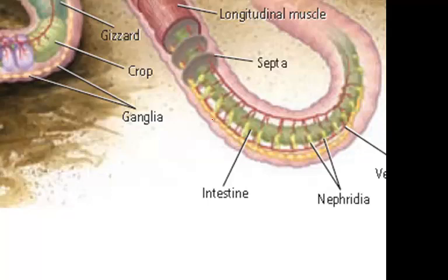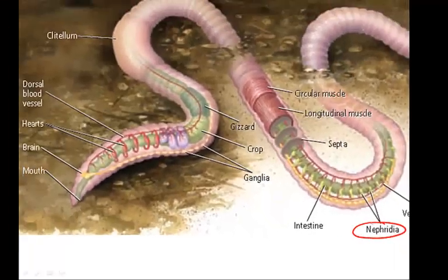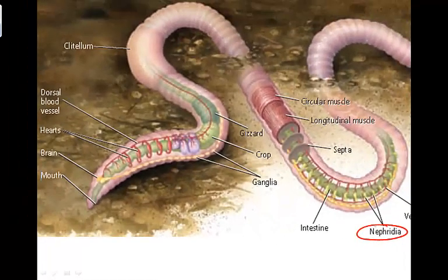There is a dorsal blood vessel that pumps blood to the anterior part of the body and a ventral blood vessel that brings blood to the posterior end. Earthworms also possess nephridia, like mollusks, in almost every segment, where cellular waste products are collected and transported out of the body.